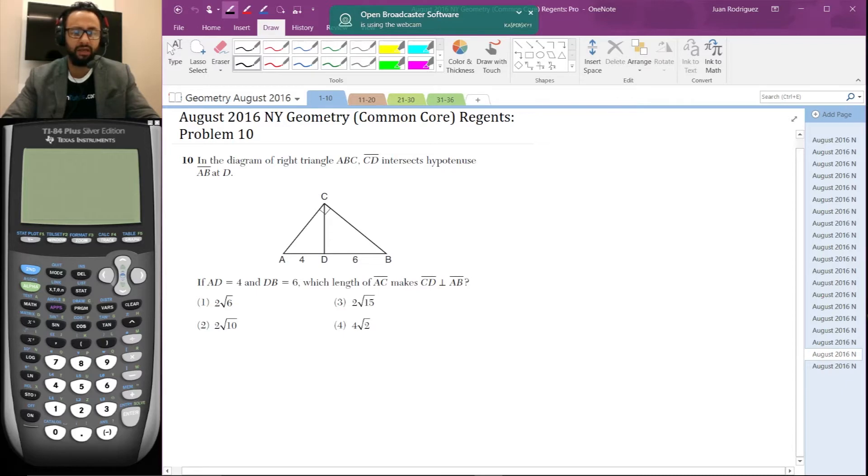CD perpendicular to AB. Okay, and then there's some measurements here. 2 radical 6, 2 radical 10, 2 radical 15, 4 radical 2. Definitely pause the video. Try this problem on your own. See if you get the same answer as we do. If you do, definitely hit the like button. And if you find this helpful, also hit the like button.